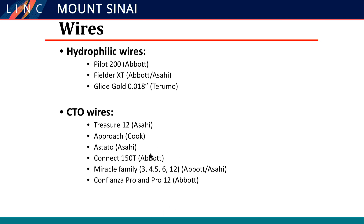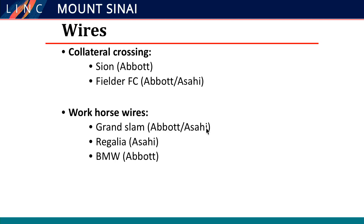From the CTO wires, there is a slew of them. I like the 250T — the Abbott wire — which I think is the most effective, and it's an 018 system. But there are other ones you can use in your armamentarium. Regarding crossing collaterals, we use some wires from the coronary experience; the Sion and the Fielder FC are reasonable wires to use to cross collaterals, and then you can exchange. For the workhorse wire — meaning once you cross the lesion and now you want to treat — I like using heavier body workhorse wires like the Grand Slam or the BMW, and I don't want to worry about perforating or putting the wire back.